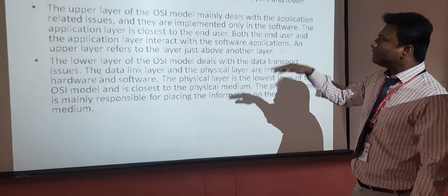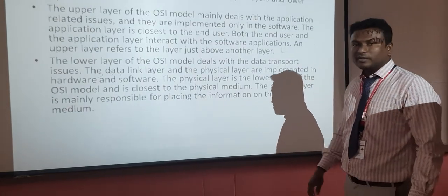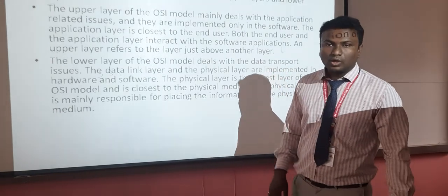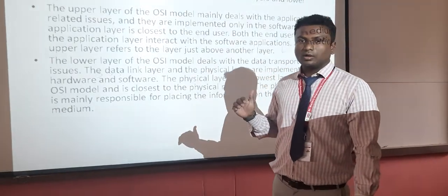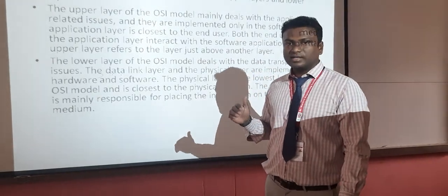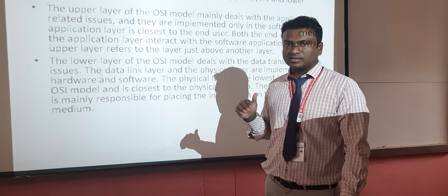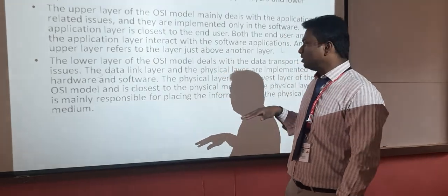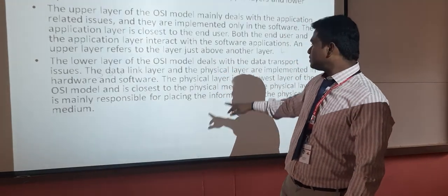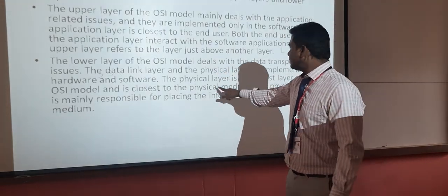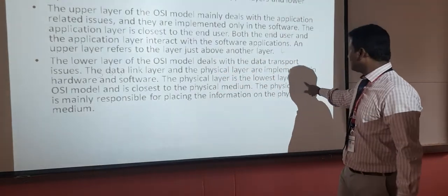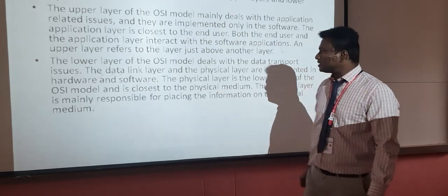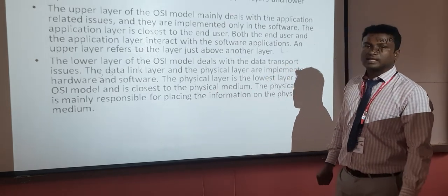The upper three layers are the software layers, and the bottom three layers are the hardware layers. The middle layer is the heart of the OSI model. The physical layer is the lowest layer of the OSI model and is the closest to the physical medium.